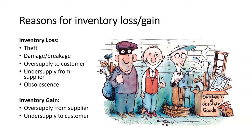Why might you have inventory loss or gain? There are lots of different reasons. Most commonly it's due to things like damage, breakage, or stock being stolen by a customer or even an employee. We can also have oversupply and undersupply. For example, you might have an inventory loss if you accidentally gave the customer too many items — you've oversupplied them. Or you might not have actually received the amount of inventory you thought you did from your supplier. For inventory gain, the reasons go the opposite way — your supplier has given you more than they should have, or you gave less to your customers.